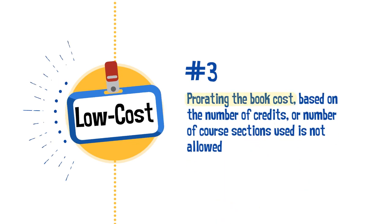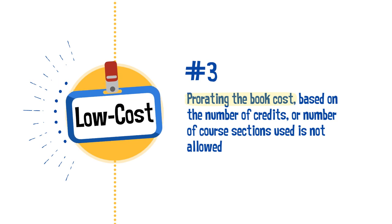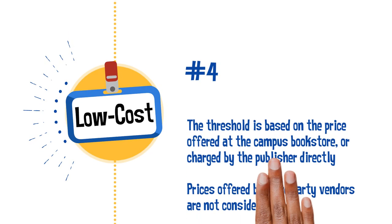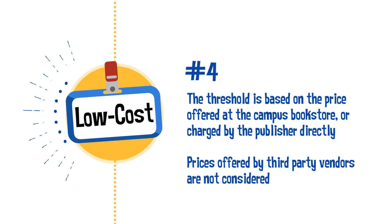Number three: prorating the book cost based on the number of credits or number of courses used is not allowed. For example, a $100 textbook spanning two quarters is not low cost, as it cannot be prorated 50-50. Number four: the threshold is based on the price offered at the campus bookstore or charged by the publisher directly, whichever is lower. Prices offered by third-party vendors such as amazon.com are not considered, due to price fluctuation and uncertainty of stock availability.